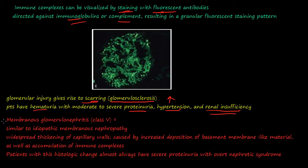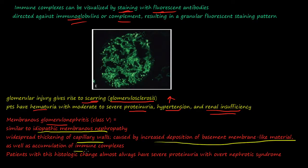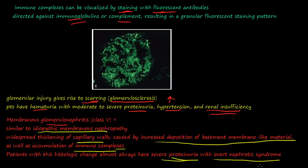Class 5 is membranous glomerulonephritis, similar to the idiopathic membranous nephropathy we'll talk about later. There is widespread thickening of capillary walls caused by increased deposition of membrane-like material as well as accumulation of immune complexes. You can see throughout class 1 through class 5 this process just keeps getting worse — more immune complexes embedded, more response to the area, scarring, thickening. Patients with class 5 almost always have severe proteinuria and overt nephrotic syndrome.